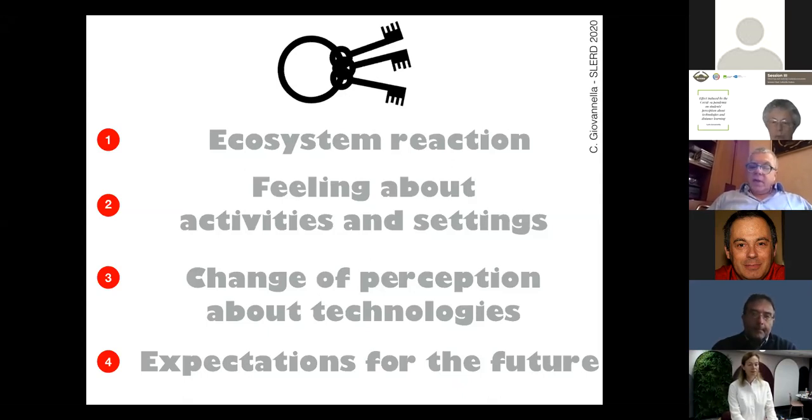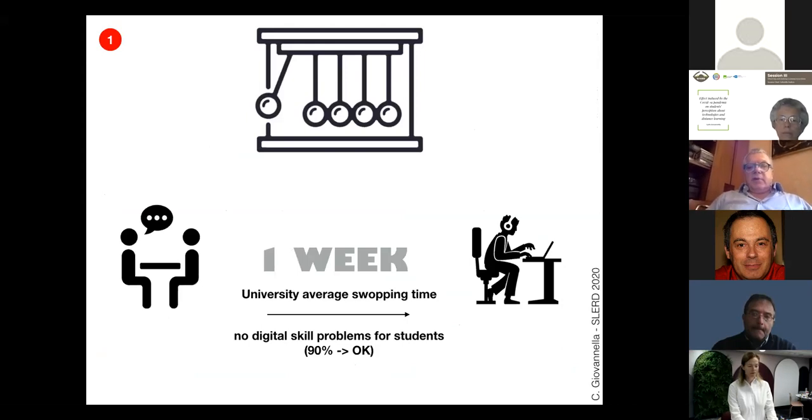What happened is that after one week, all universities in Italy were swapping online. One week was the average swapping time for all universities in Italy. Apparently, we had no big trouble because at least the students had no big trouble. 90 percent of them think that the digital skills they had were not a problem to switch online. Of course, this is also because maybe most of the activities just tried to replicate the standard classroom dynamics.